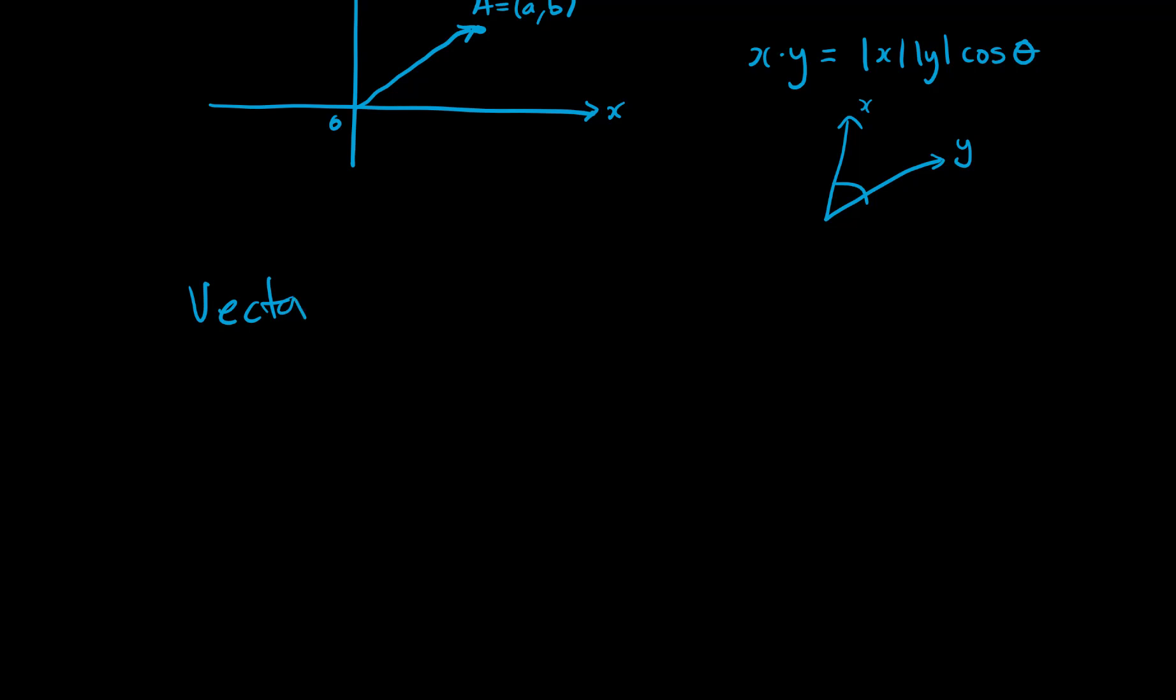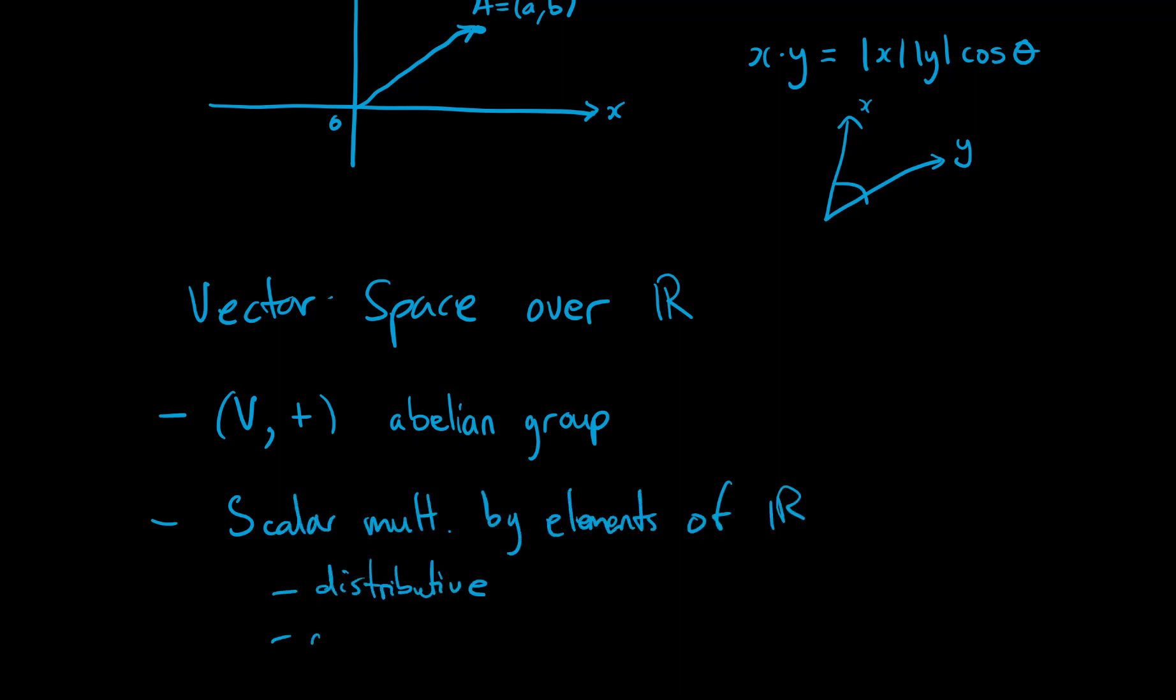Observe the axioms for a vector space. A vector space over a field F, in this case the real numbers. What is it? It is a set V together with an addition under which V forms an abelian group, and it has a scalar multiplication by elements of R that is distributive and associative. So if we look at this set V, anything that satisfies all of these axioms will also be a vector.